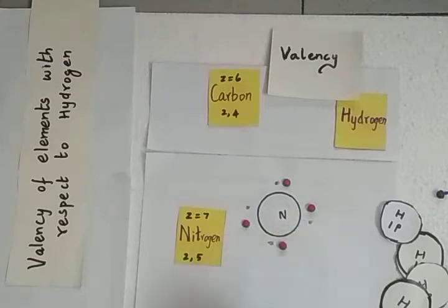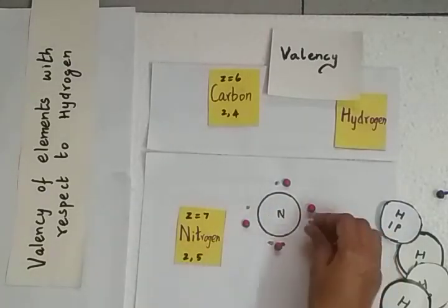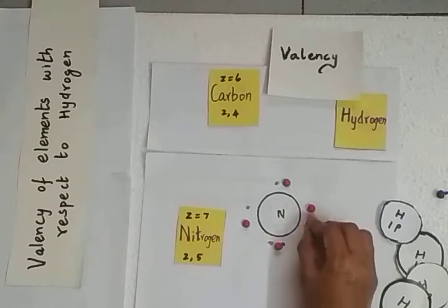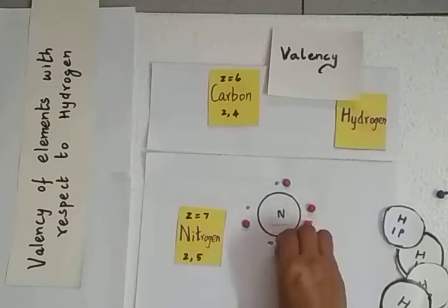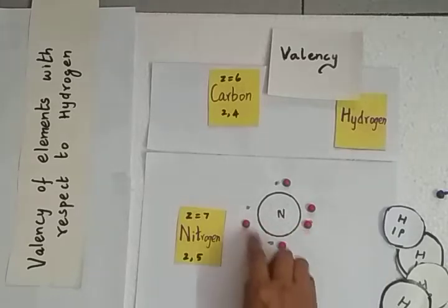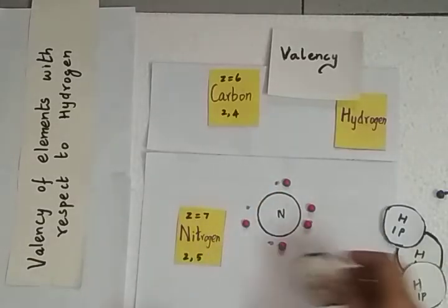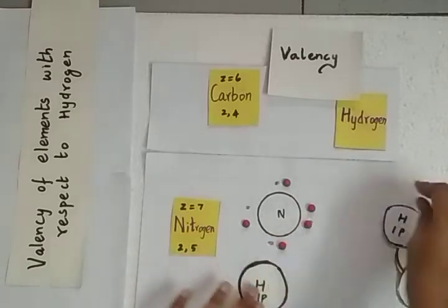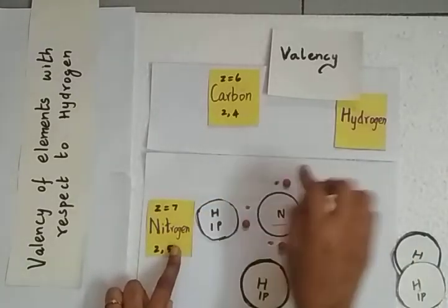Nitrogen has 5 valence electrons represented around the symbol. It needs 3 more electrons to complete its octet configuration. So nitrogen will combine with hydrogen atoms, forming bonds.